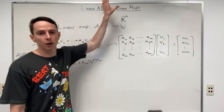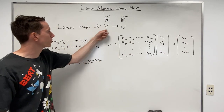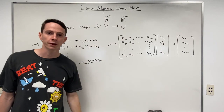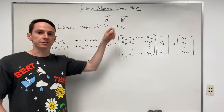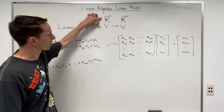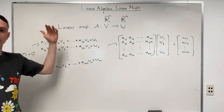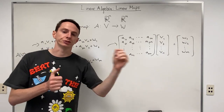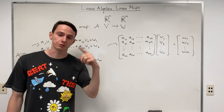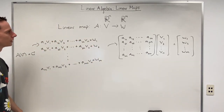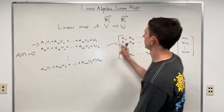This section has been all about linear maps, which we could call A — these are functions between two vector spaces V and W. For the purposes of this course, we can think of these vector spaces generally as R^N into R^M, where N and M are different positive integers. We're interested in linear maps because they preserve the operations defined in a vector space: vector addition and scalar multiplication.